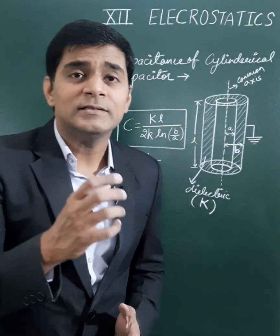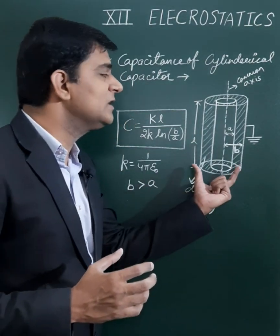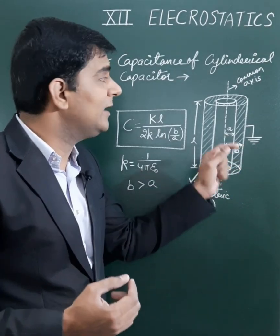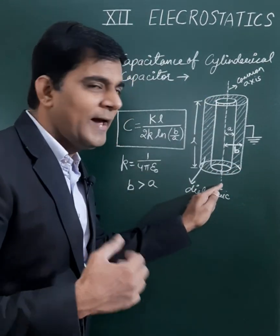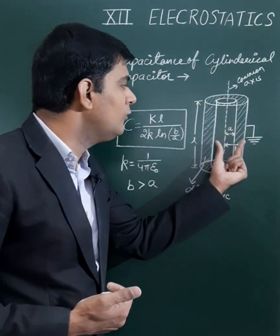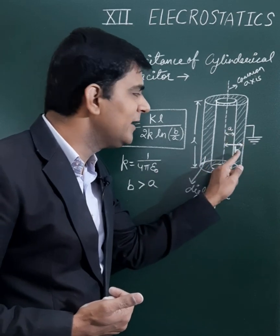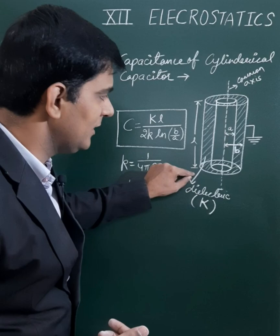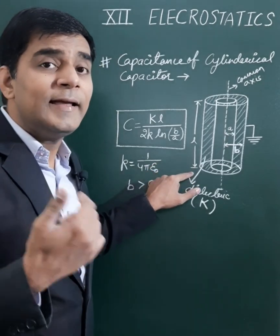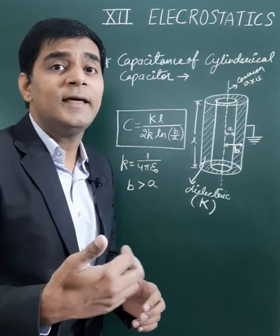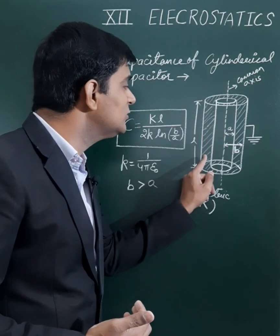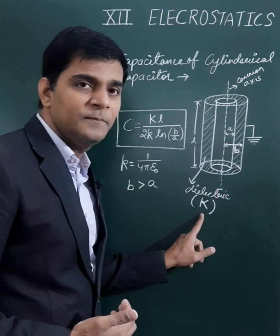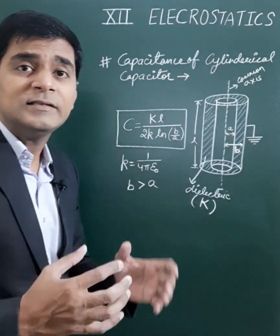The cylindrical capacitor consists of two cylinders placed along a common axis. Let their inner and outer radii be small a and small b, and small l is the length of both cylinders. The dielectric constant of the dielectric placed between these two cylinders is capital K, so the capacitance in this situation